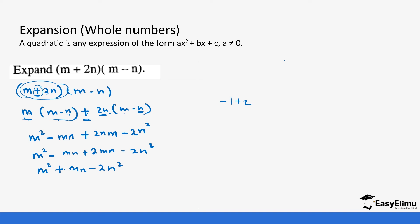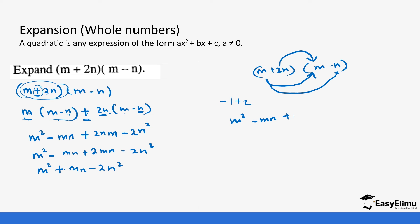Another way is to do it manually using arrows. So m plus 2n, m minus n. m is going to multiply with m to give us m squared, and then the same m multiplies minus n to get minus mn. Then positive 2n multiplies m to form positive 2mn, and this positive 2n still multiplies negative n to form negative 2n squared. Putting like terms together: m squared minus mn plus 2mn gives plus mn, then minus 2n squared — which is the same answer. Either method gives the same result; the only difference is that one shows opening brackets explicitly, while the other uses arrows.